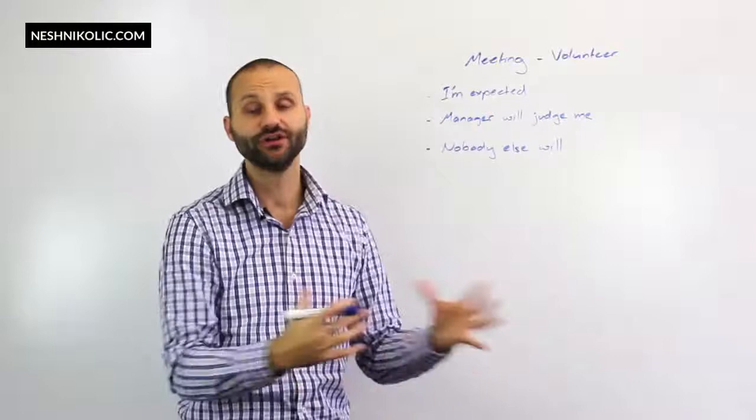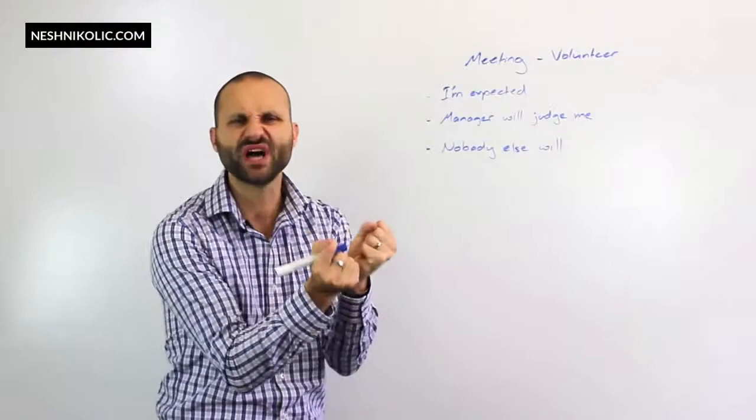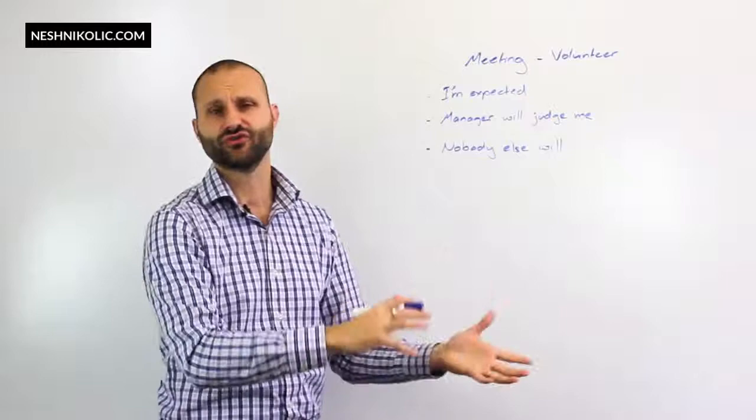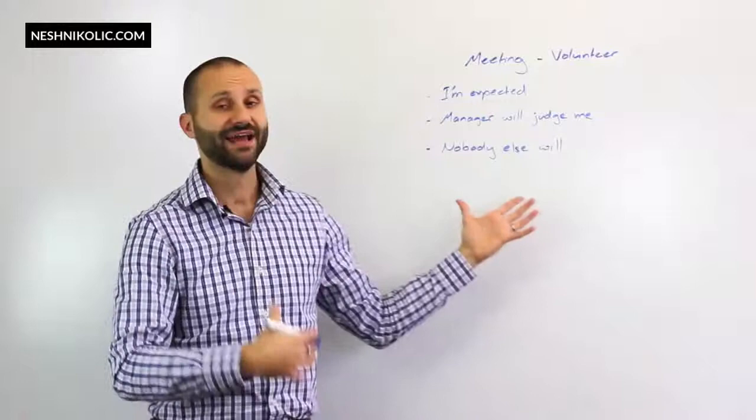So we broke this down. We looked at she's trying to actually get rid of the thoughts. And in diffusion, in cognitive diffusion, what we're actually looking to do is to not hold these thoughts so tightly, not to grab them and hold on and adopt them as this almighty encompassing truth. We're not interested in truth in ACT, we're interested in what's of benefit, what's of use, what's of value. And these really weren't beneficial for her. They were coming up over and over again, but they had no benefit in this scenario of being in a meeting and a volunteer being called.